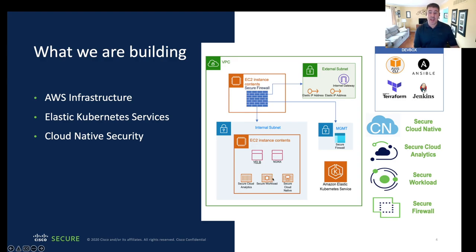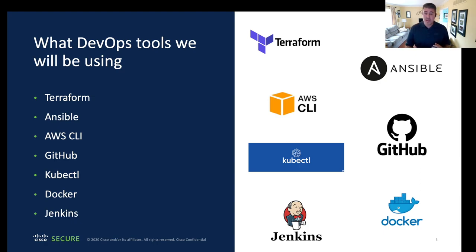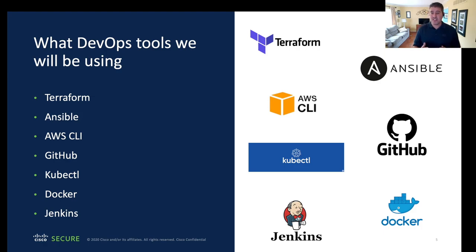We're also going to have some security apps inside that Kubernetes environment. To deploy this, we're going to need a dev box with all our DevOps tools. Terraform is one of the most popular infrastructure-as-code tools — it's also getting very popular with security-as-code. As a security vendor, we've been writing providers that allow us to use Terraform to configure security as code as well. We're also using Ansible, which is a super powerful configuration management and provisioning tool. We're going to utilize Ansible to do configuration management with our secure firewall, and show how we can use Ansible to secure workloads and other things as well.